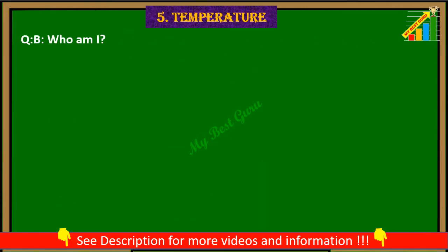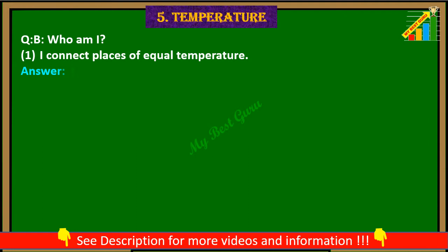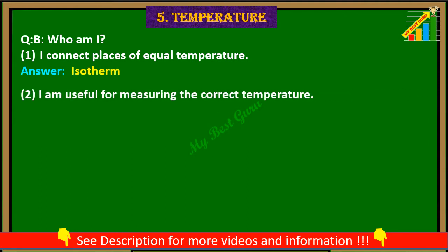Question B. Who am I? 1. I connect places of equal temperature. Answer: Isotherm. 2. I am useful for measuring the correct temperature. Answer: Thermometer.